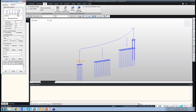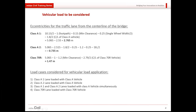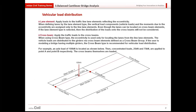For a lane element option, the vehicle load (moving load) would be assigned as a vertical load as well as a bending moment based on the eccentricity. Say a vertical load of 100 tonnes is placed at an eccentricity of 2 meters — for the line element, 100 tonnes will directly be applied at that point, and a moment of 100 × 2 = 200 tonne-meters will also be applied at the same point. This is how the distribution will happen if the lane element option is selected.